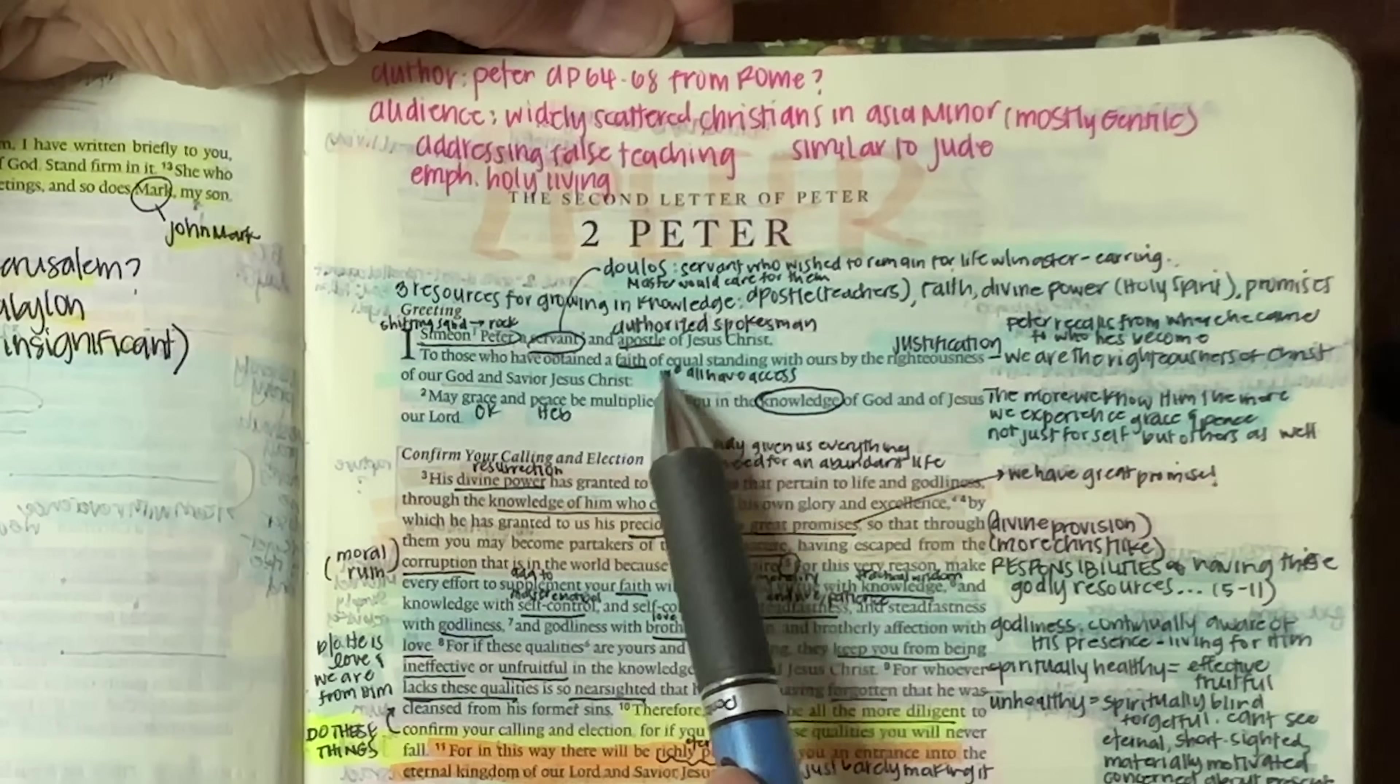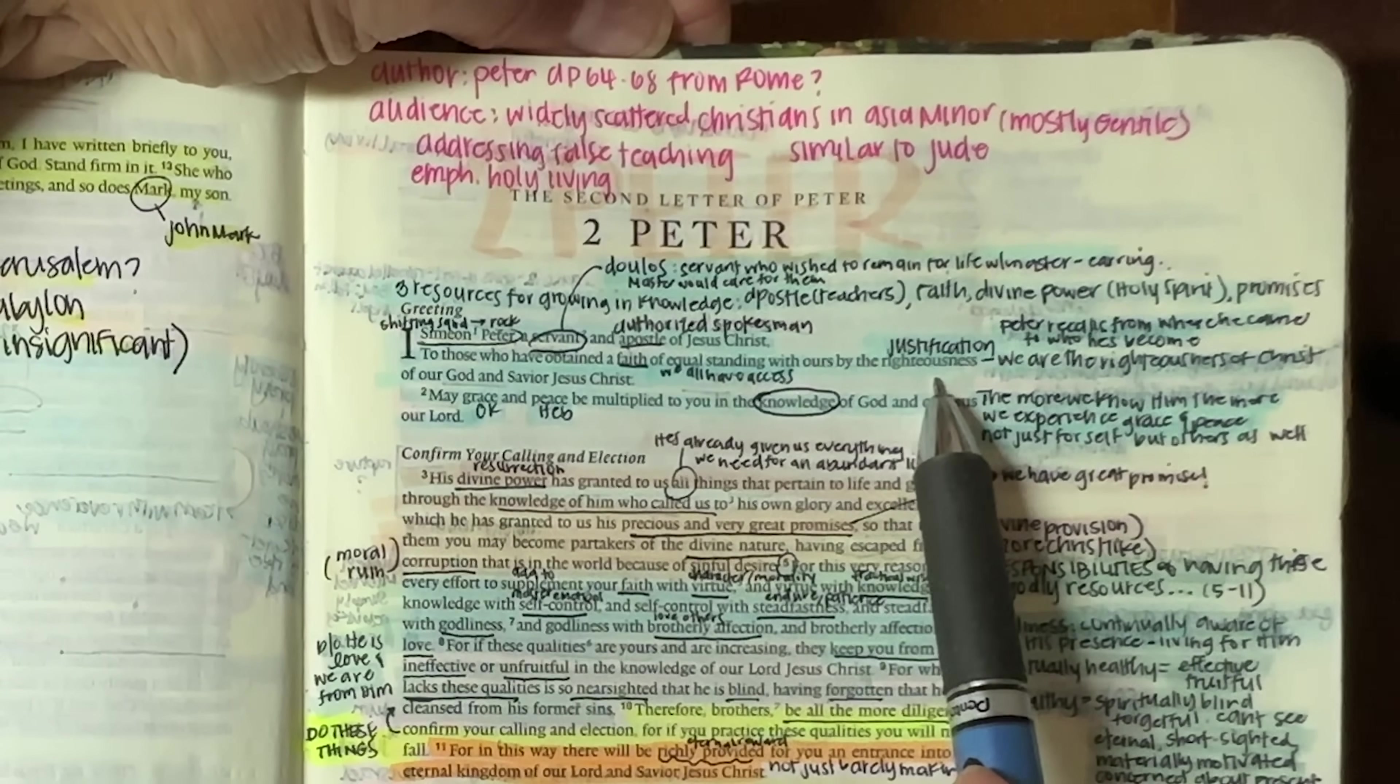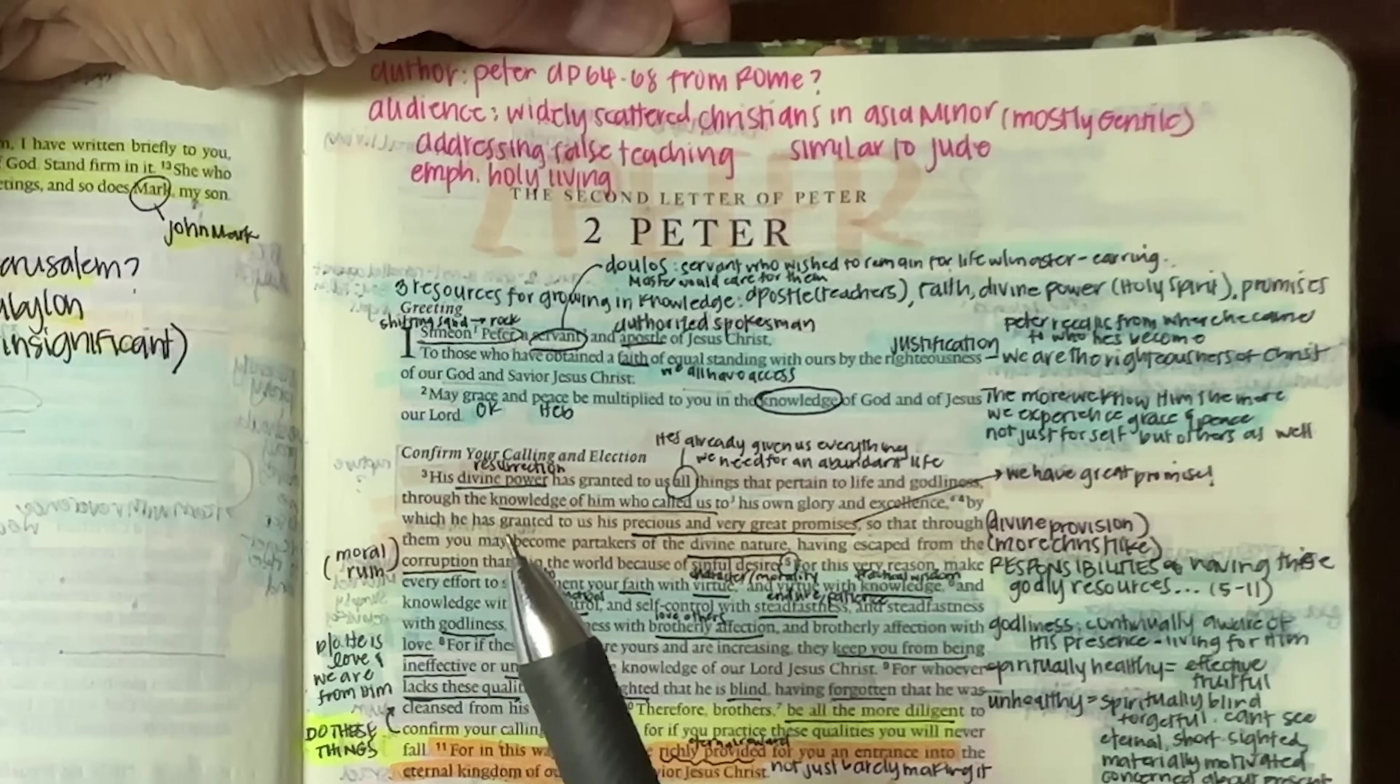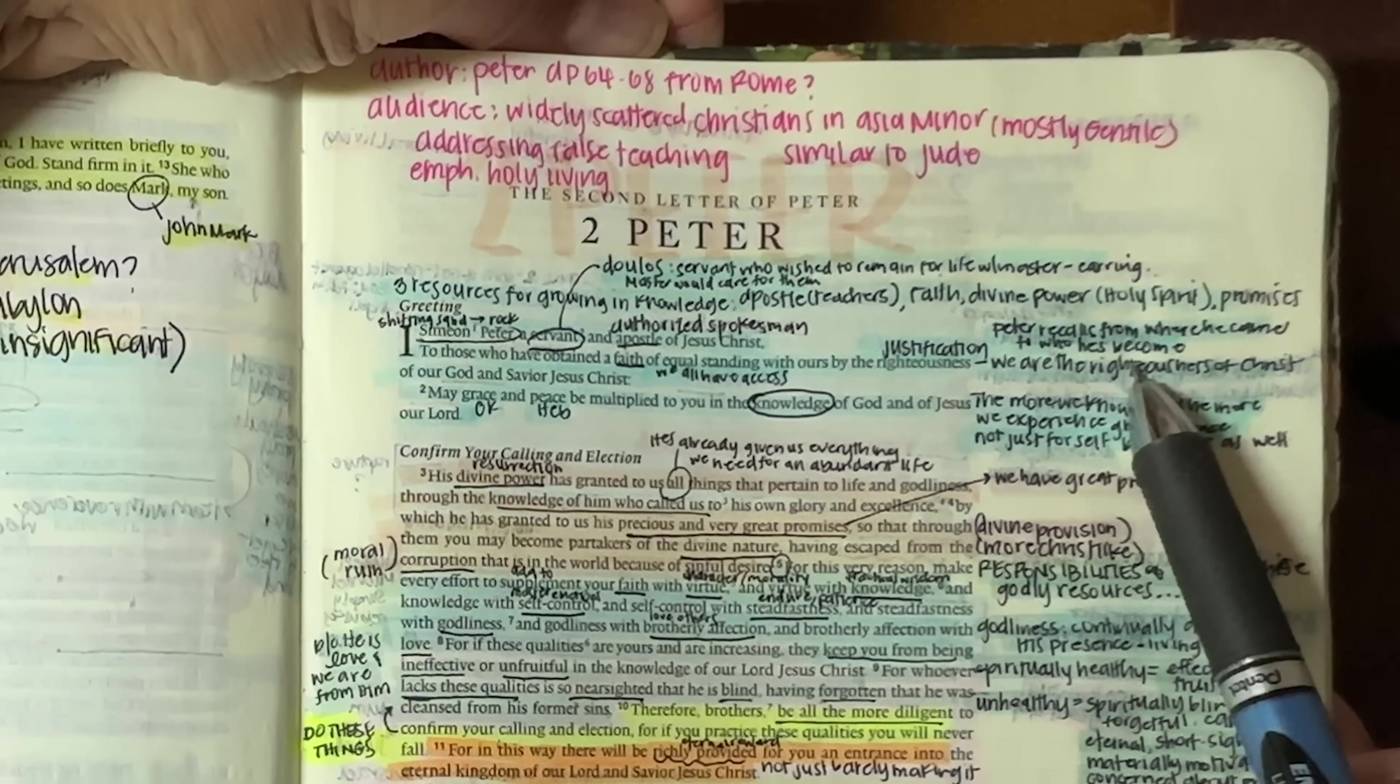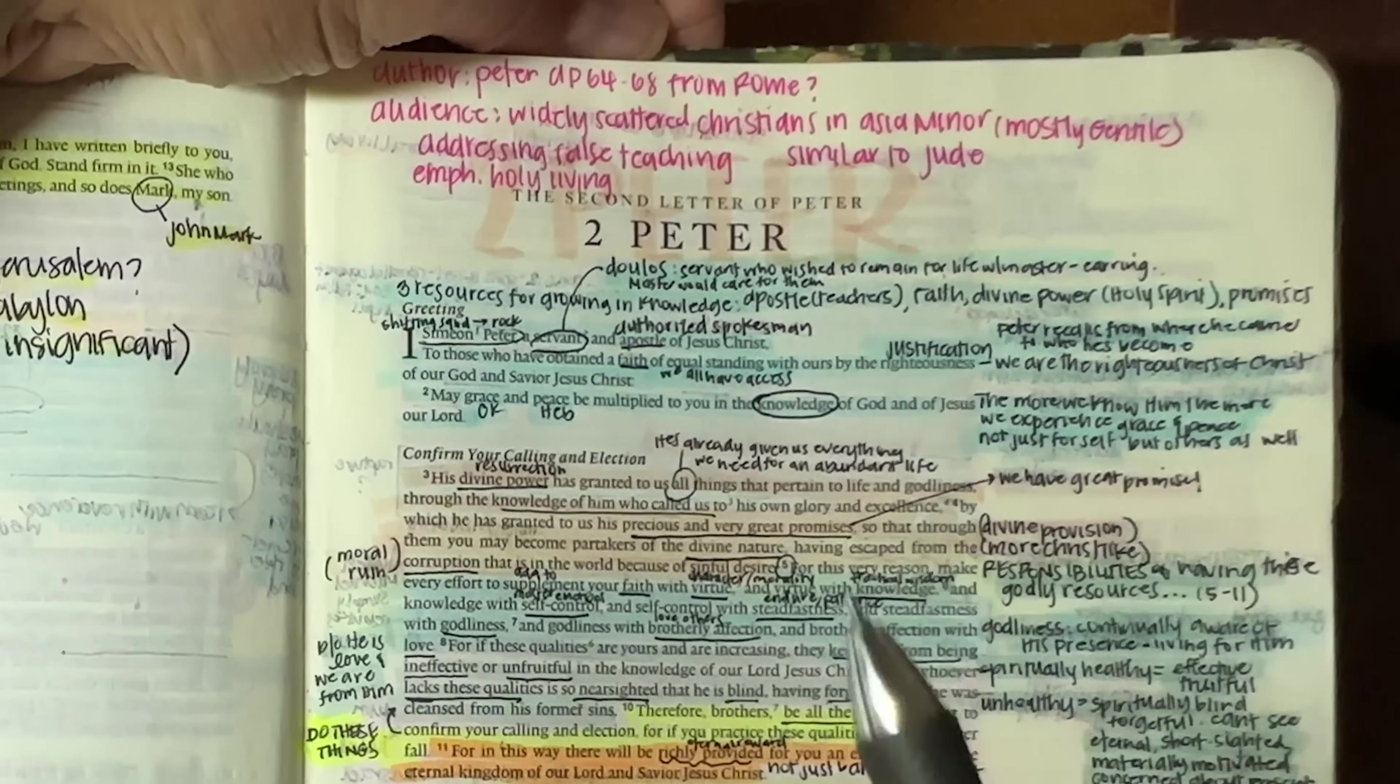So that's how he is referring to himself of Christ, but also as an apostle and authorized spokesman to those who have obtained a faith of equal standing with ours by the righteousness of our God and savior, Jesus Christ. So he's essentially putting himself on the same level as every other Christian saying, we all have access by the righteousness of God to that faith. So by the justification, the fact that we have been saved, we are all on equal ground. We all have the same standing with him.